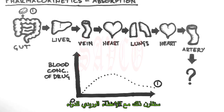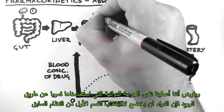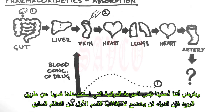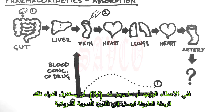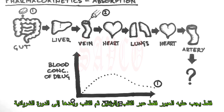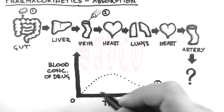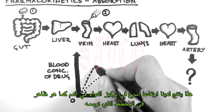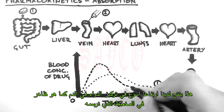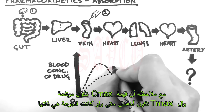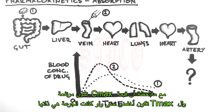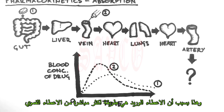We'll now contrast that with intravenous administration. Assume that we give the same dose of the drug intravenously — and this drug does not undergo first-pass metabolism. In intravenous, or IV, administration, the drug doesn't have quite such a long journey to reach the arterial circulation, as it only has to go to the heart, the lungs, back to the heart and then to the arteries. This results in a quicker rise of drug concentration. Note that the C-max is larger and the T-max is smaller, even though the dose was the same, because IV is a more direct route of administration than orally.